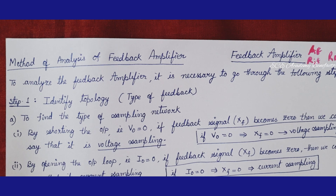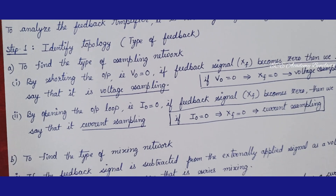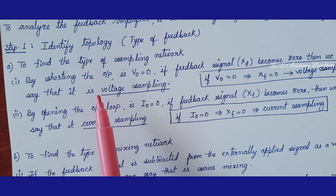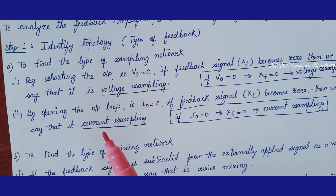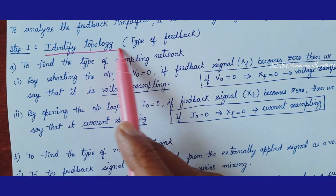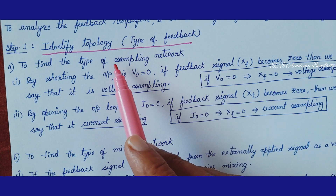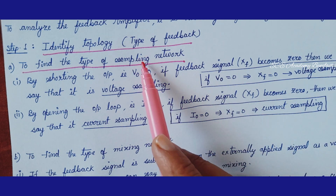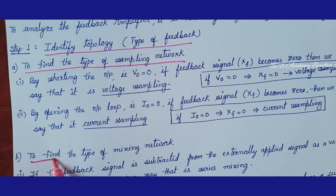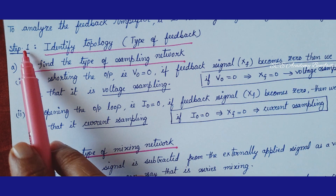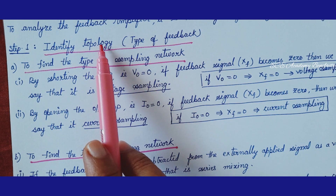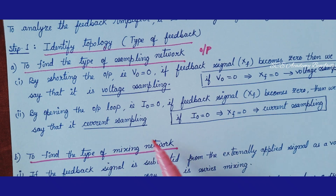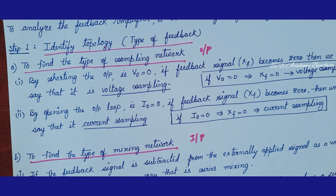To analyze the feedback amplifier it is necessary to go through the following steps. The first step: identify the topology. By looking at the circuit diagram you need to identify the topology. To know the topology you need to know what is sampling and what is mixing. Sampling is at the output side and mixing is at the input side.